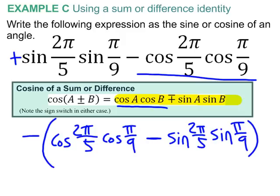And, at this point, when I look at the formula, I see that the 2 pi over 5, that is where the A is in the formula. And, the pi over 9, that is where the B is in both parts of that formula. So,